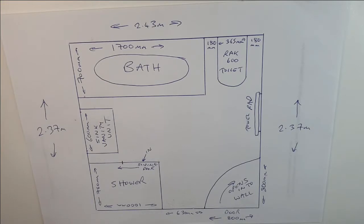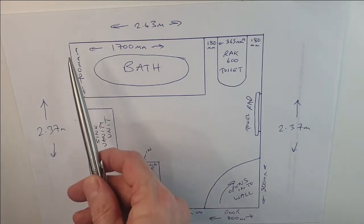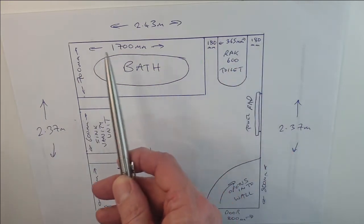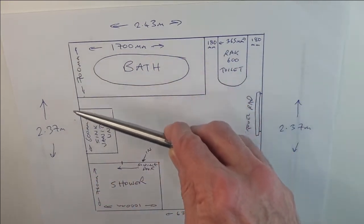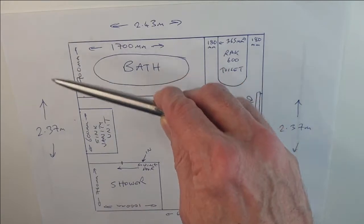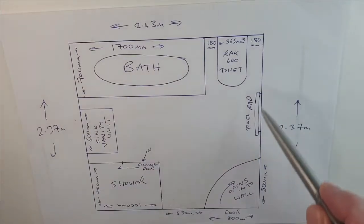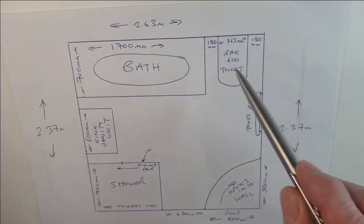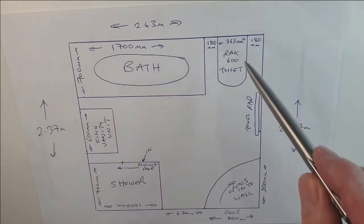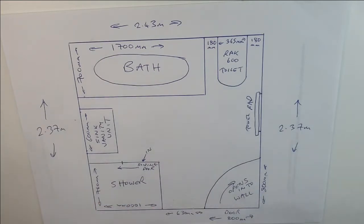Before we started any building work, we drew up a plan as to how the bathroom would work well. The first thing to do is to take the dimensions of the room. This room was essentially eight feet square — 2.43 meters across the back wall and 2.37 meters down either side. The starting point for your design is to draw that out on a blank piece of paper to scale.